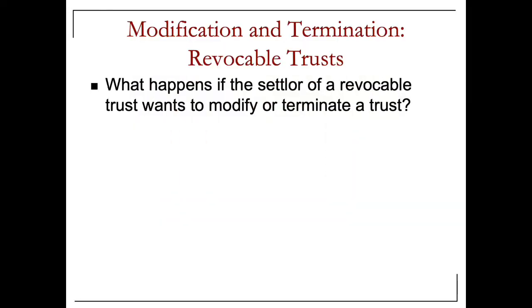When a settlor wants to make changes to a revocable trust or terminate it: a settlor can do whatever they want with a revocable trust because they have maintained control in almost all cases. If the trust instrument allows modifications by the settlor, then the settlor can modify — there are no restrictions against that for revocable trusts.